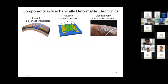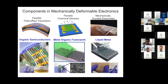What are some of the components needed in these mechanically deformable electronics? Here I've mentioned three that I'm currently working on: field effect transistors to process and amplify signals, various types of sensors for wearable electronics where sensing is the main functionality, and mechanically durable electrodes. The materials I'm working with are organic semiconductors for field effect transistors, metal-organic frameworks for chemical sensing, and liquid metal for electrode applications.